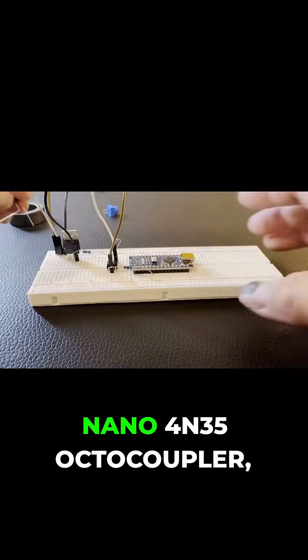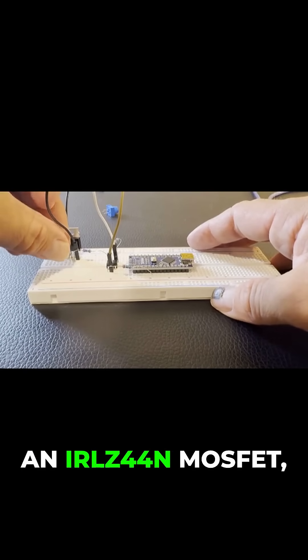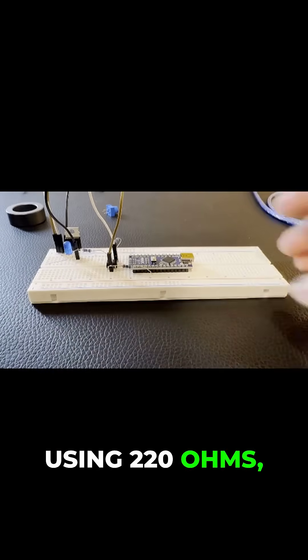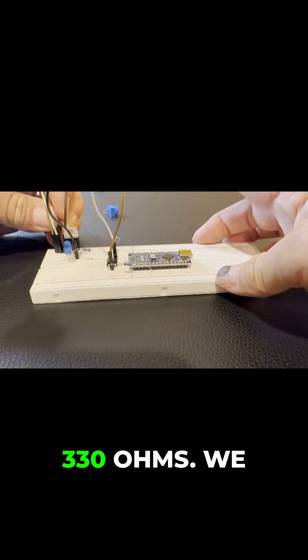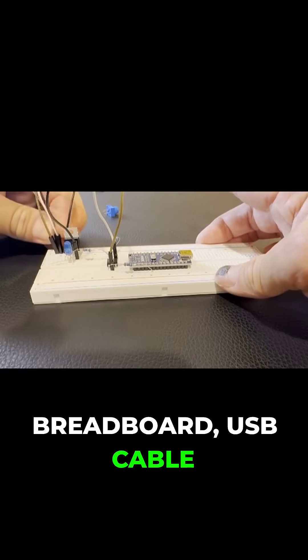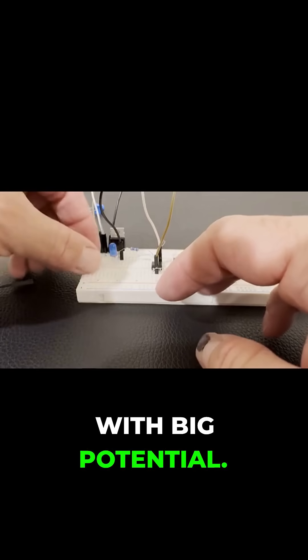So far we've got the Nano, 4N35 octocoupler, an IRLZ44N MOSFET, some resistors, right now we're just using 220 ohms, 10k ohms, and 330 ohms. We have jumpers, LED, breadboard, USB cable for uploading the code, simple parts with big potential.